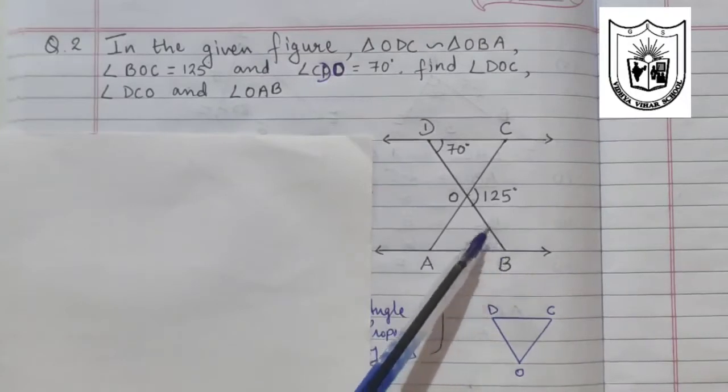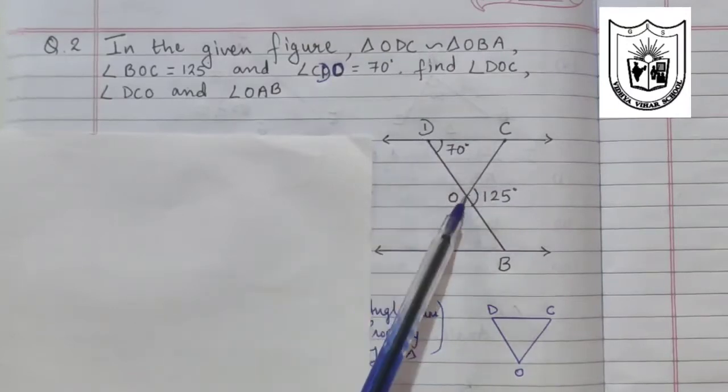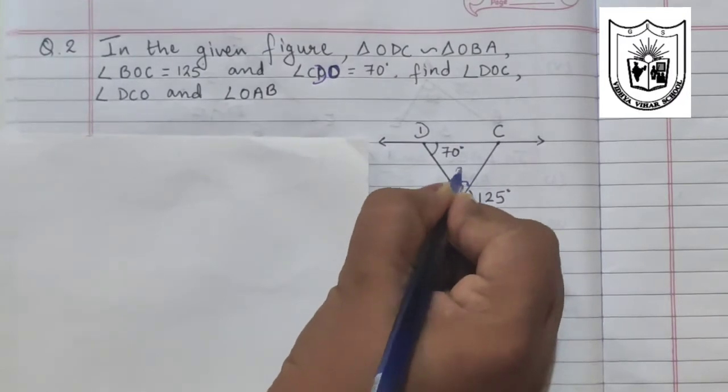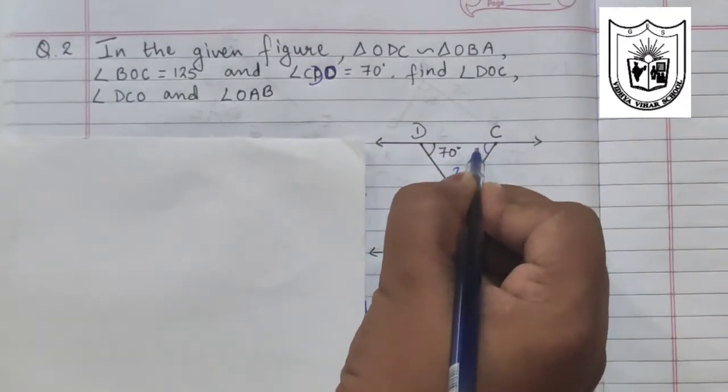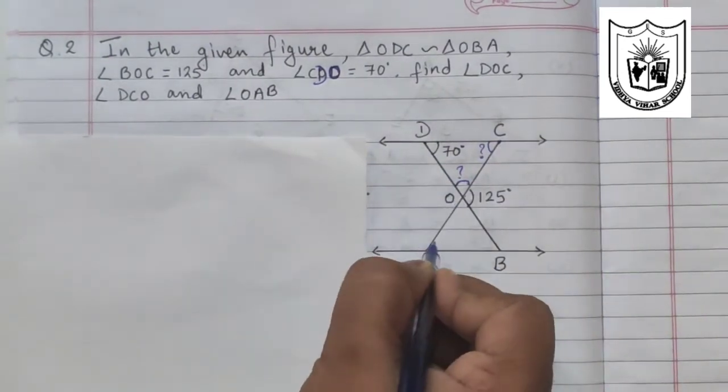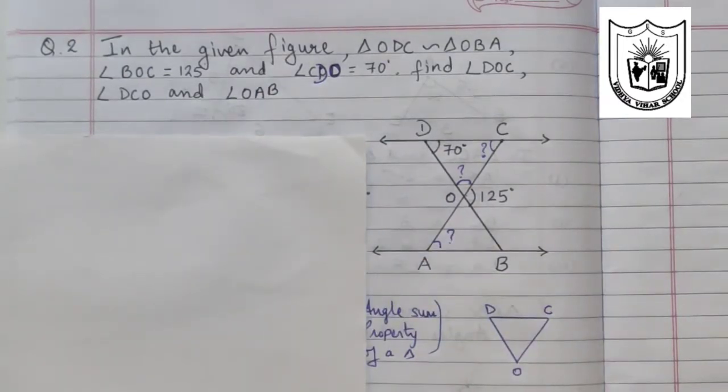Angle BOC, this exterior angle, is given to us as 125 degrees. Angle CDO is 70 degrees. We have to find angle DOC, angle DCO, and angle OAB. Now that we have understood what is given and what is to be found, let us begin.